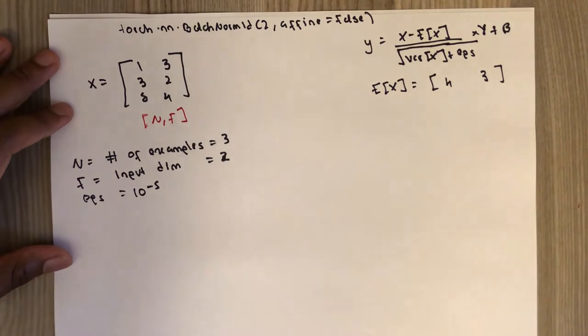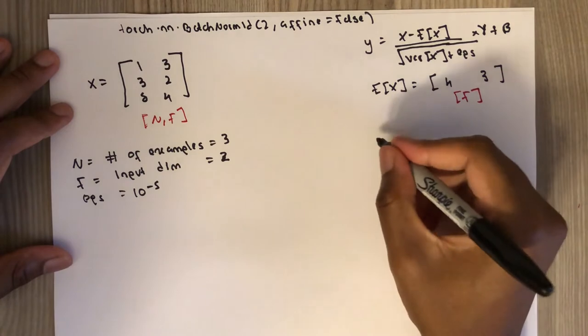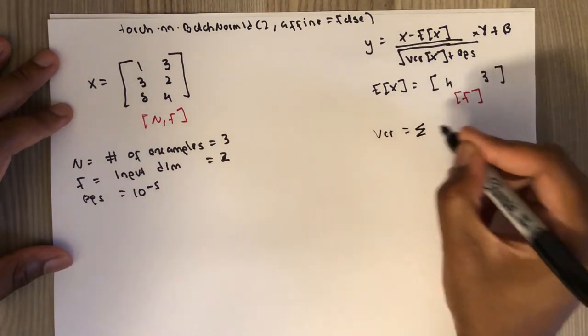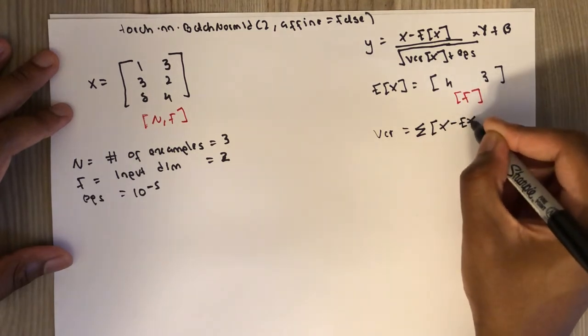So the mean of the first feature is 4, the mean of the second feature is 3. The dimension is F. The variance, let me actually write the formula for variance. X minus the expected value of X.